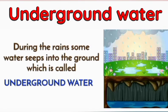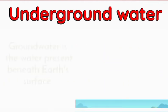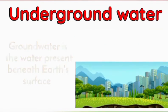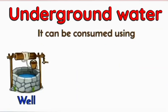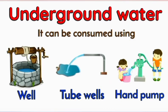Underground water: during the rain, some water seeps into the ground, which is called underground water. Underground water is the water present beneath the earth's surface. It can be consumed using a well, tube well, or a hand pump.